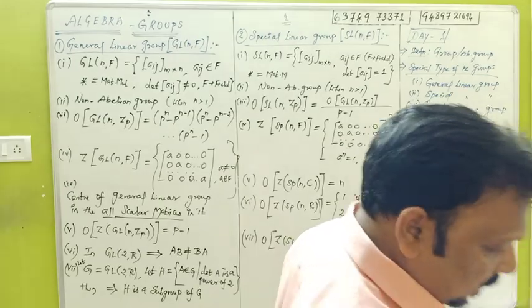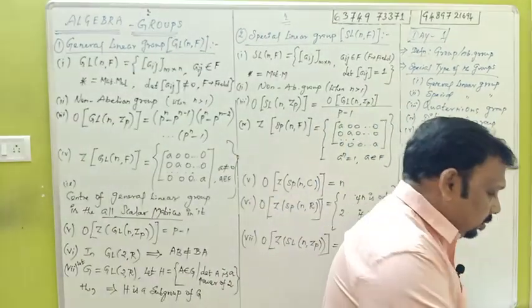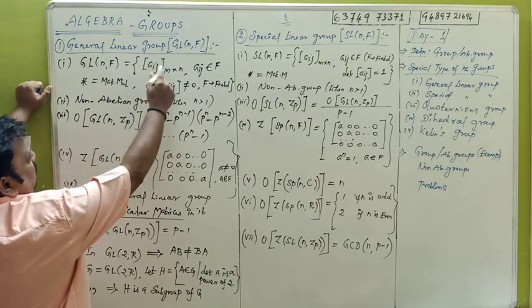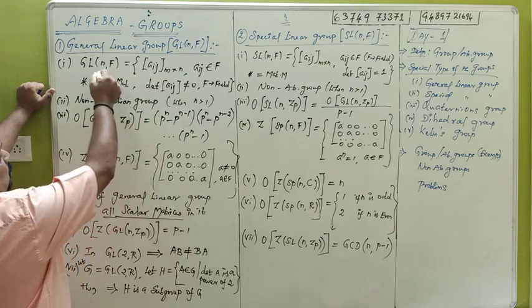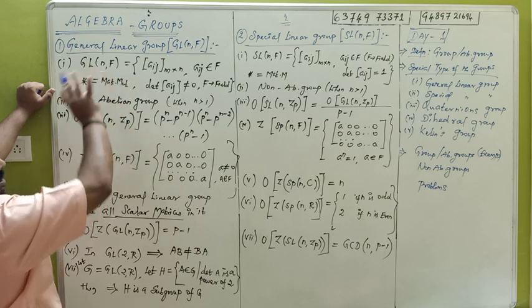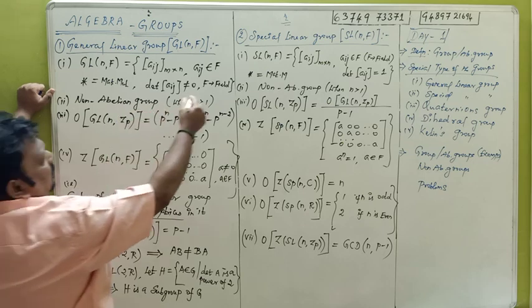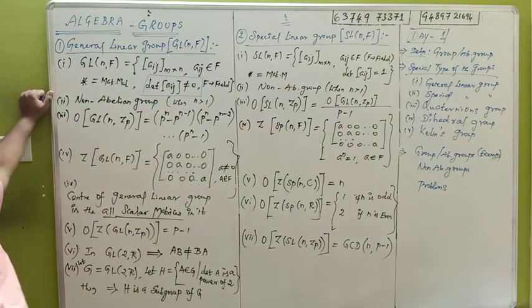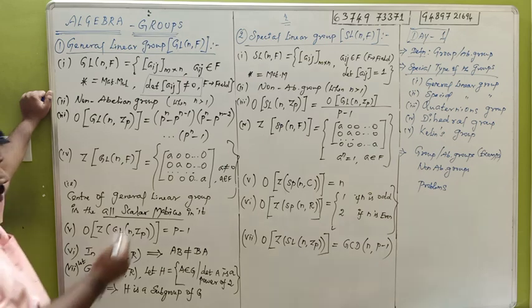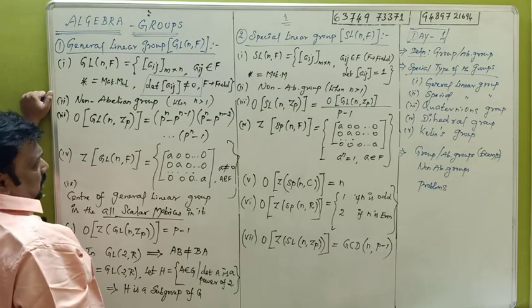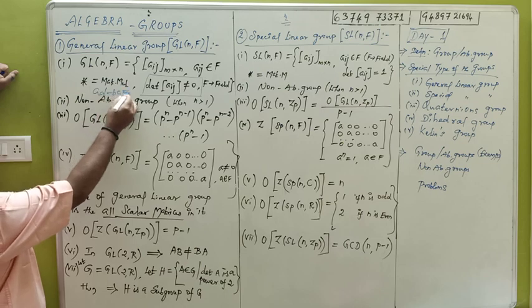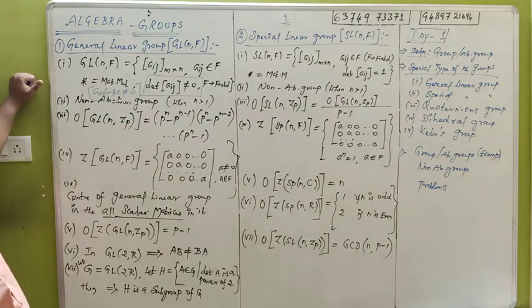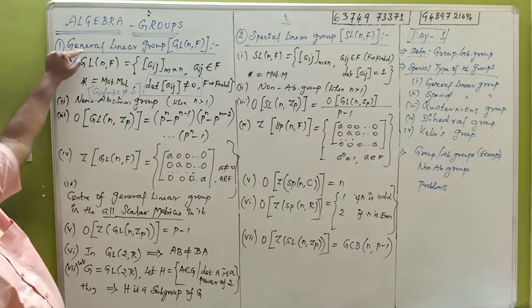A special linear group — you can see what type you can see. So, what type is the order? F into the field. If you want to see the element value, the element value is not equal to 0. That is a general linear group. If you have the element value equal to 0, then the element value is 0 at 2. When this element value is 0, you can see what type — a general linear group.